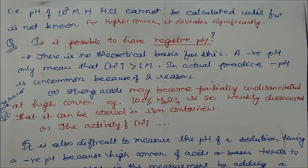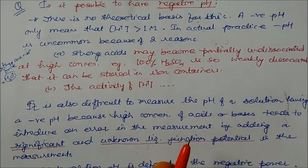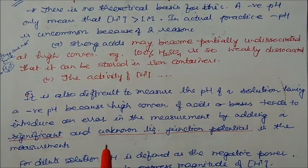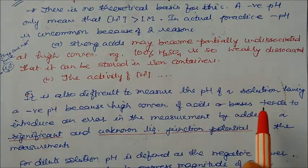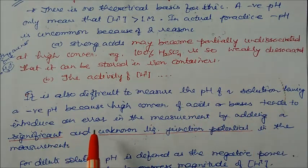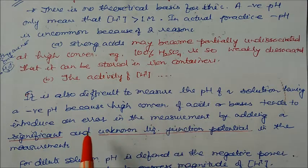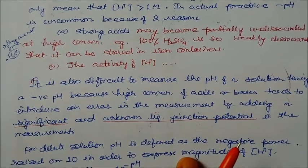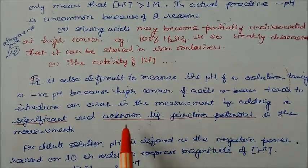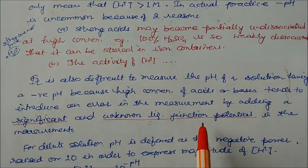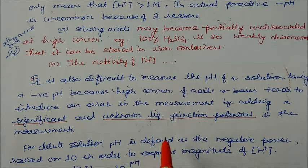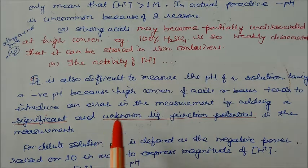It is also difficult to measure the pH of a solution having negative pH. Why? Because the higher concentration of acids or bases tends to introduce an error in the measurements. In that concentration there is an error in the measurement by adding a significant or unknown liquid junction potential.